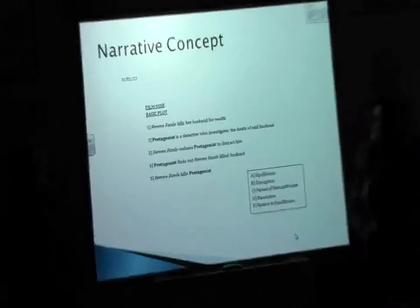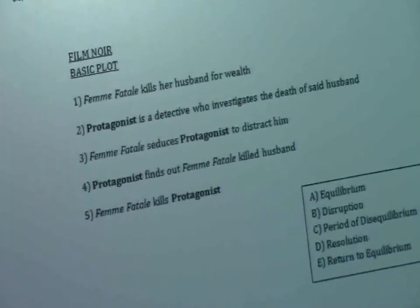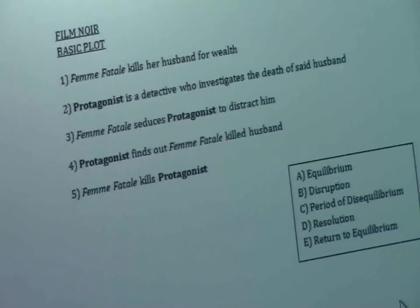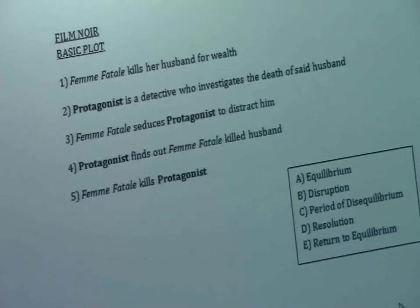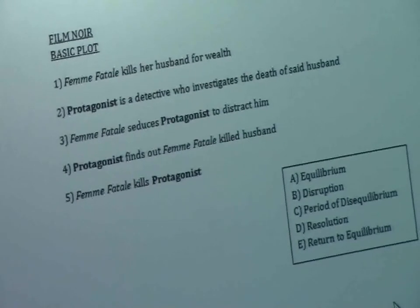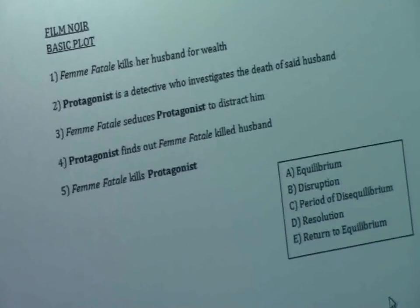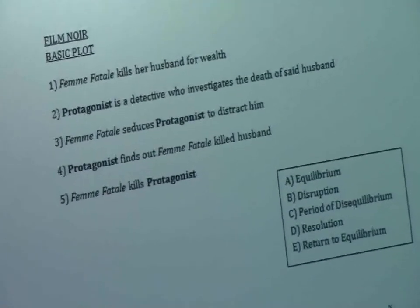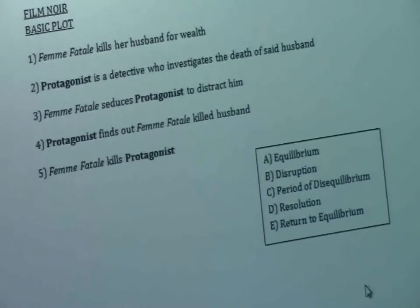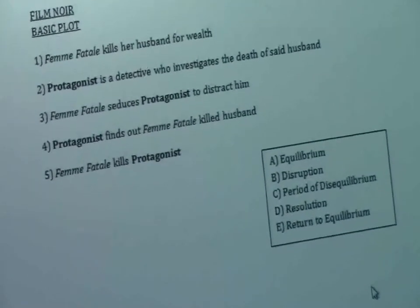This is our narrative concept. The femme fatale kills her husband for wealth. The protagonist is the detective who investigates the death of the husband. The femme fatale then seduces the protagonist to distract him. The protagonist finds out that the femme fatale killed the husband, and then the femme fatale kills the protagonist. We tried to go through the five stages, but it didn't quite work because of the flashback — it follows it, but not religiously.